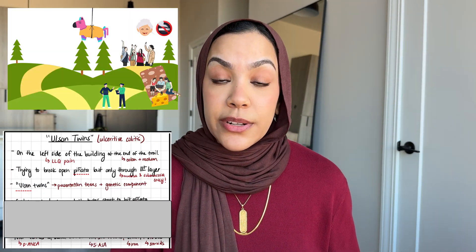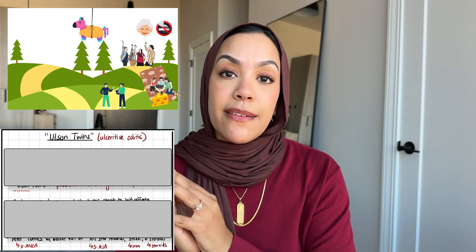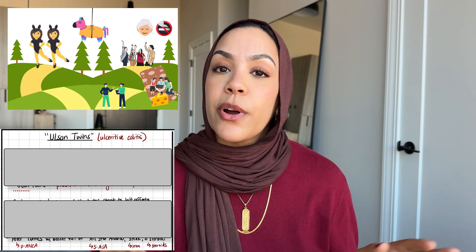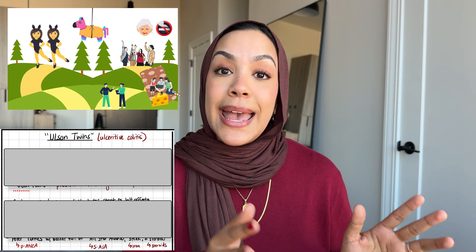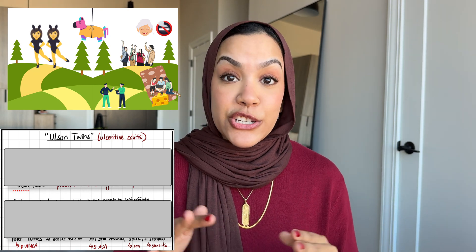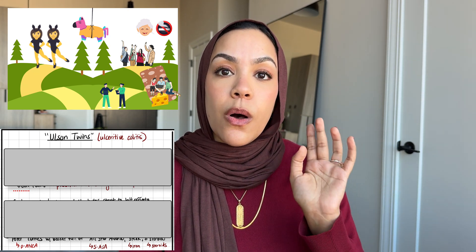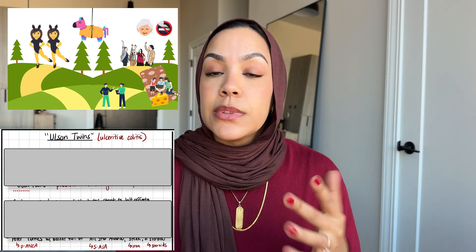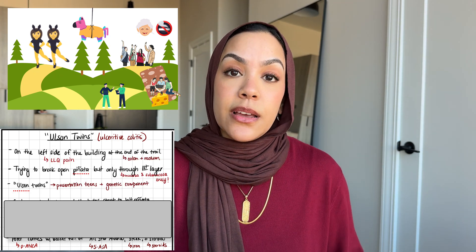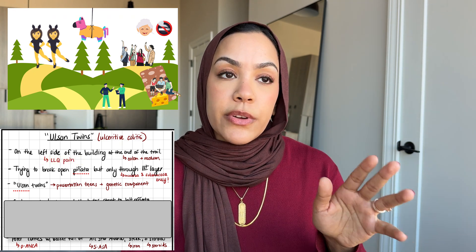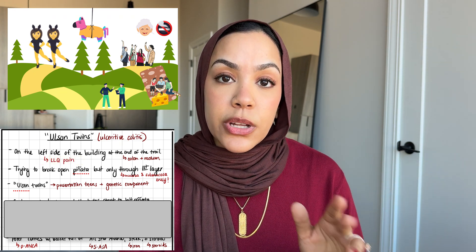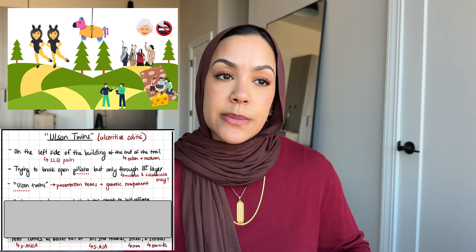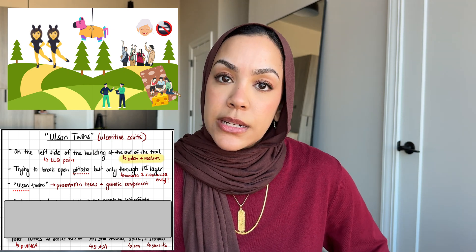Now that's half of it. The other half is ulcerative colitis, represented by the Olsen twins — Mary-Kate and Ashley — who are on the left side of the building, sitting all the way at the very end of the trail, not scattered throughout. The left side of the building is because this involves the left lower quadrant, and them sitting only at the end of the trail — not scattered like in Crohn's — is because ulcerative colitis affects the colon and the rectum only.